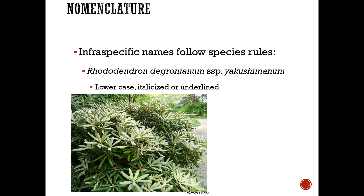Infraspecific names follow species rules. For example, Rhododendron degronianum subspecies yakushimanum. These are lowercase, italicized or underlined. Infraspecific taxa include subspecies — morphological variations with their own geographic distribution — variety, which has less geographic distinctness and may have adjacent distributions, and form, which describes trivial variations occurring among individuals of any population.